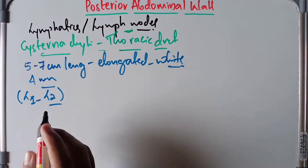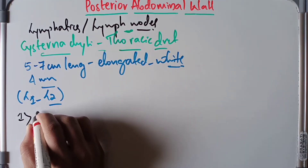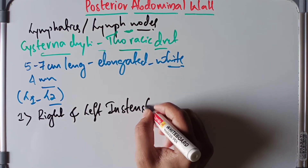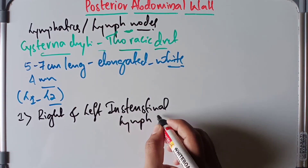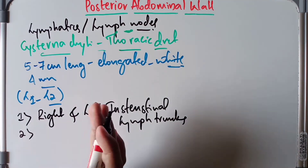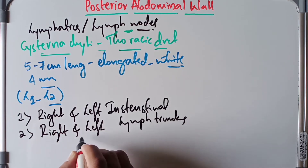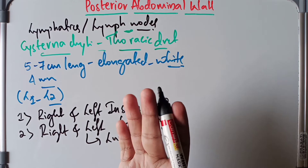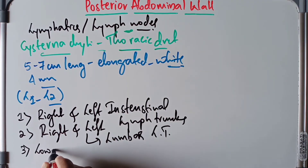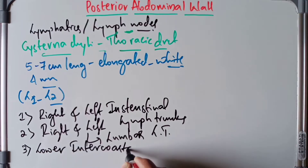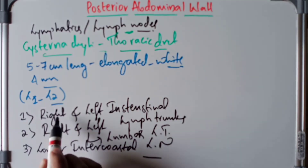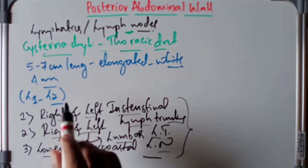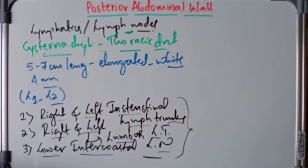The tributaries of the cisterna chyli are: first, the right and left intestinal lymph trunks; second, the right and left lumbar lymph trunks; and third, a pair of lymph vessels draining from the lower intercostal lymph nodes. All three drain into the cisterna chyli.